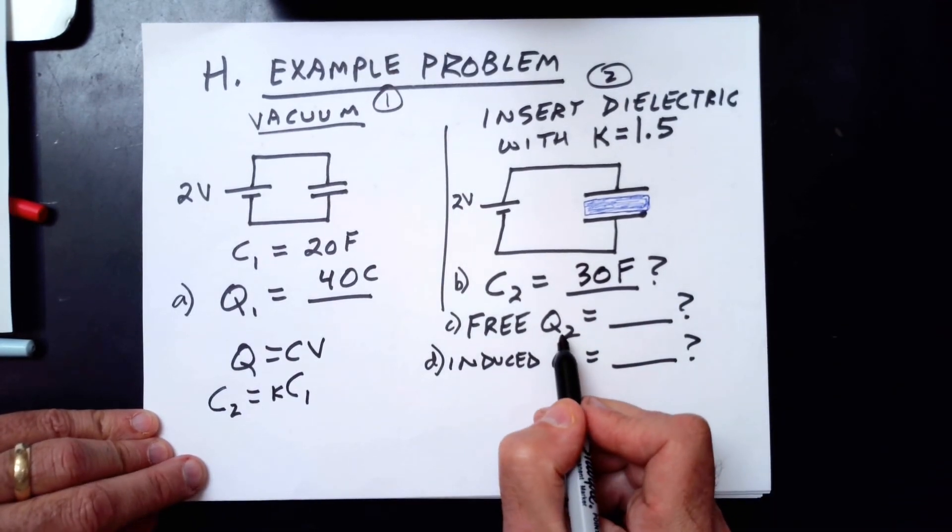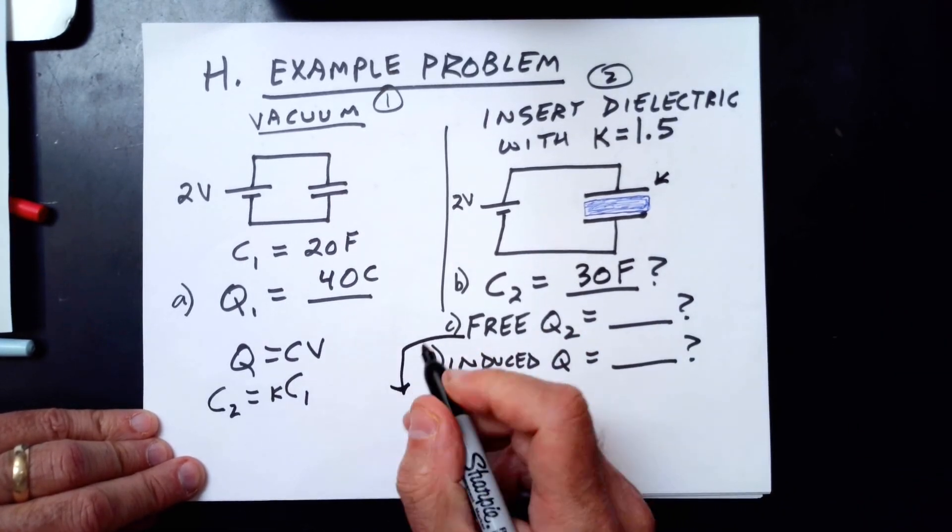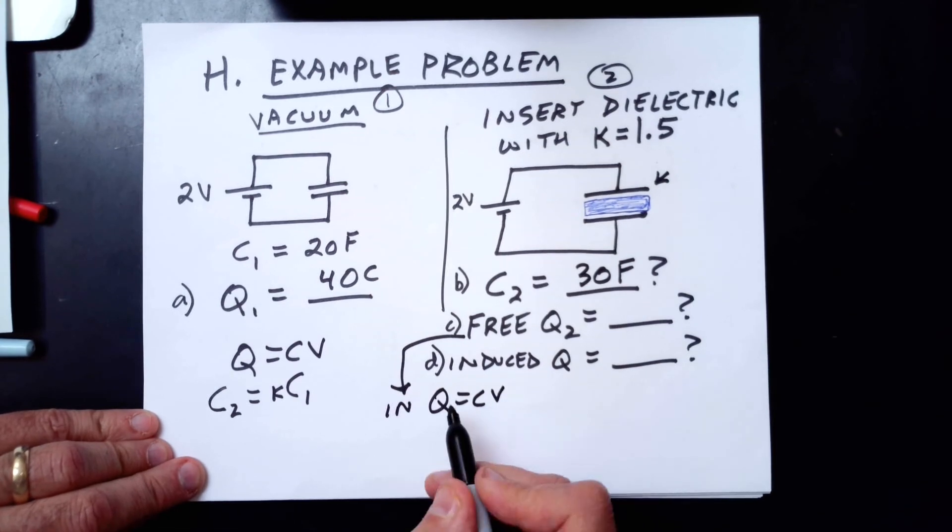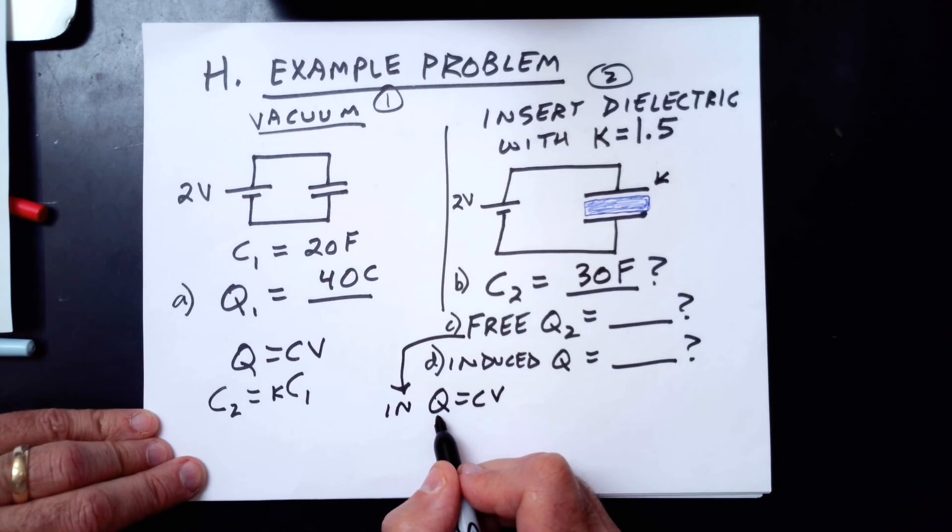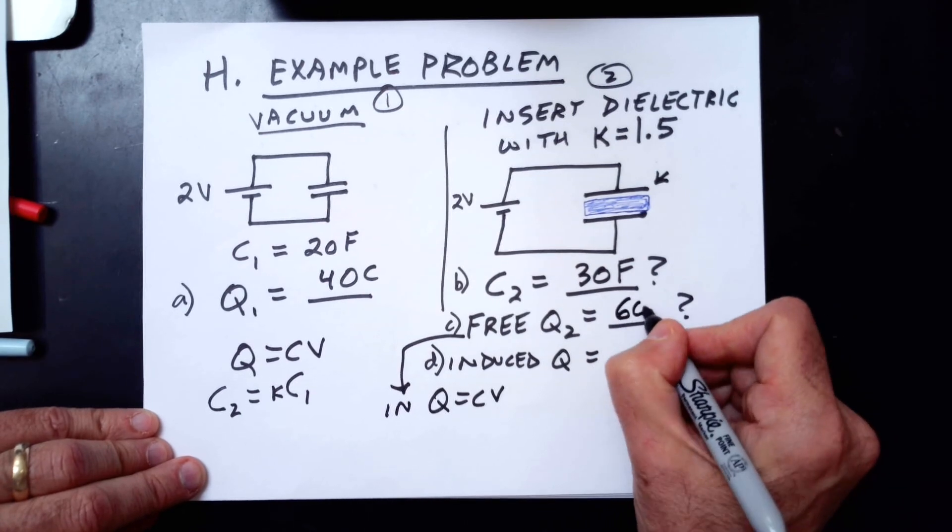Next question, figure out the free charge on the plate here. Well, free charge, that's the charge that's in the equation Q equals CV because it's the charge that's free to move around in the circuit. So that's in the equation Q equals CV. So that's 30 times 2, so that's 60 Coulombs.